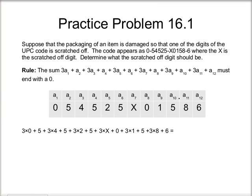So I want to put the numbers that I have into my rule. And that's going to give me 3×0 + 5 + 3×4 + 5 + 3×2 + 5 + 3×X + 0 + 3×1 + 5 + 3×8 + 6. Whenever this turns out to be, I want it to end in a 0. So if I go ahead and add up everything except for my 3×X here, I'm going to get 3×X, and then everything else is going to add up to 71.